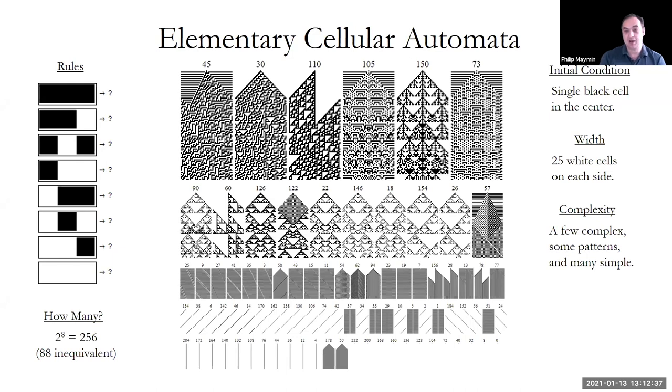But these six up top are the only ones that have any form of real complexity. Now, what is complexity? We'll talk a little bit about it later, but basically, as you point out in this book, complexity is something, it's like art. You know it when you see it. You know this is complex. Maybe you're not sure about this one, 150, or this one, but we notice complexity pretty nicely.